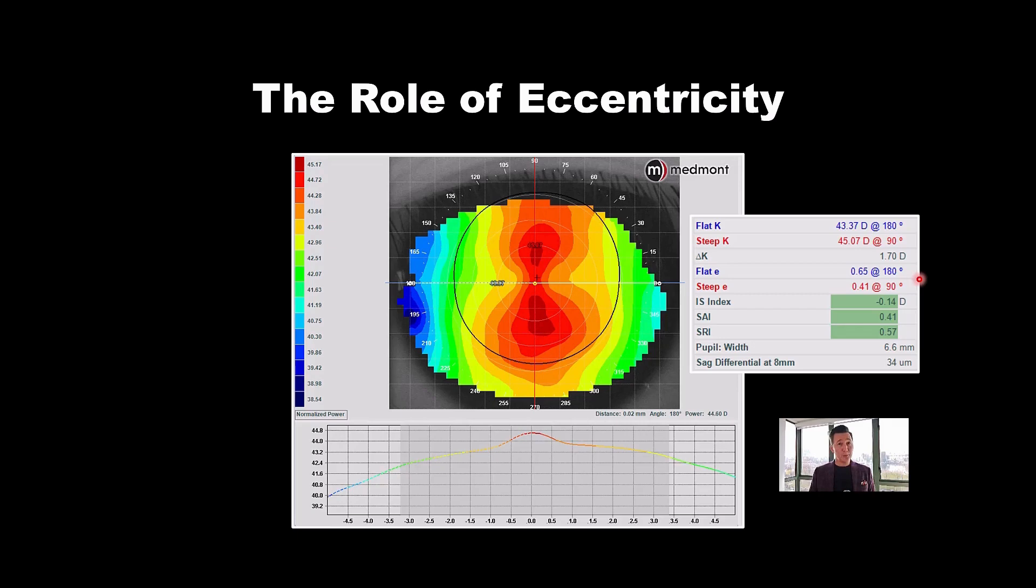If you have a patient who's minus four, five, or six, and you have a median radius eye, and an eccentricity that's slightly lower, maybe 0.5, that could be a problem for predictability. That could be a little tougher of a case. You may not be able to achieve the myopic reduction that you hope for.